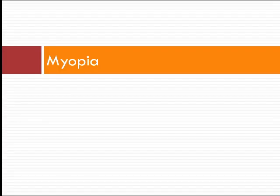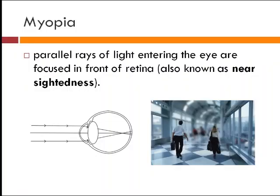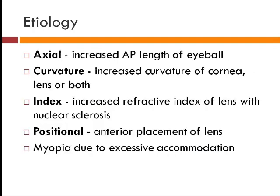Now comes myopia — it is the most common refractive error, in which parallel rays of light entering the eye are focused in front of the retina. It is also labeled as near-sightedness because the patient will be able to see near things clearly. Similar to hypermetropia, myopia is also classified according to axial length, curvature of the cornea, lenticular power, and position. Myopia can also be due to excessive accommodation, which is why children are advised not to overuse gadgets like mobile phones and tablets.